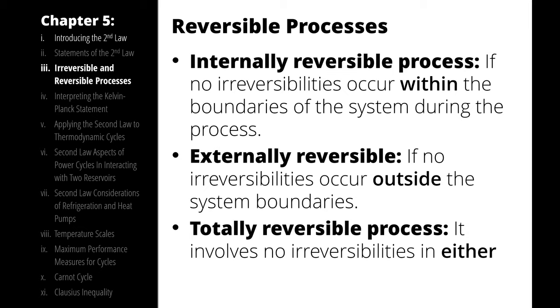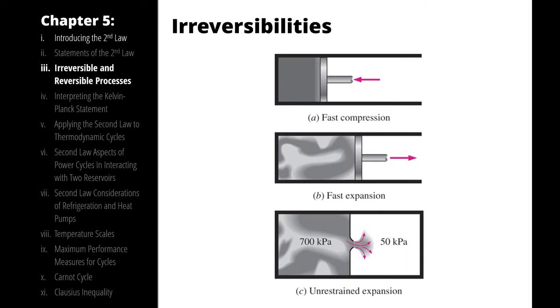The presence of expanding or contracting quickly represents losses. The fastest, most lossy, most irreversible type of expansion or compression is unrestrained.